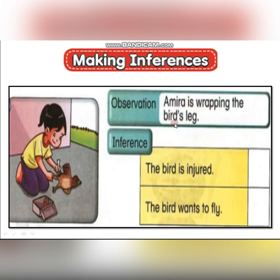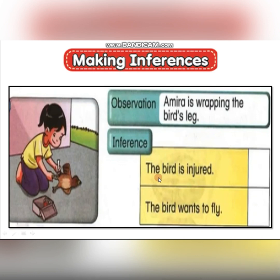Now let's do this activity. The observation is: Amira is wrapping the bird's leg. We want to know the reason why. The inference choices are: the bird is injured, or the bird wants to fly. The answer is: the bird is injured. This is the reason why Amira is wrapping the bird's leg.